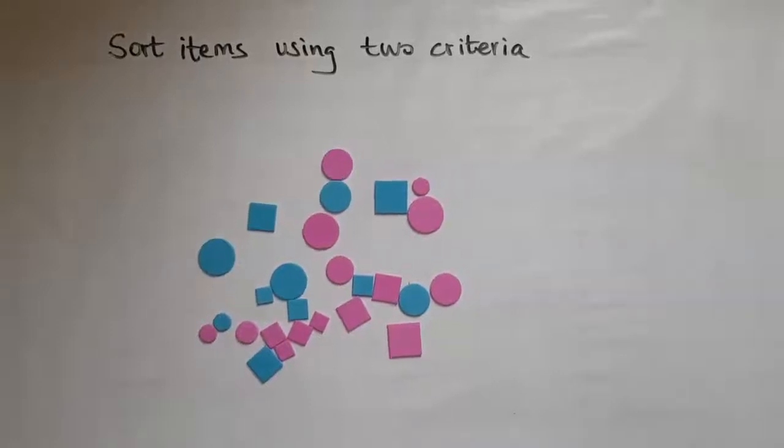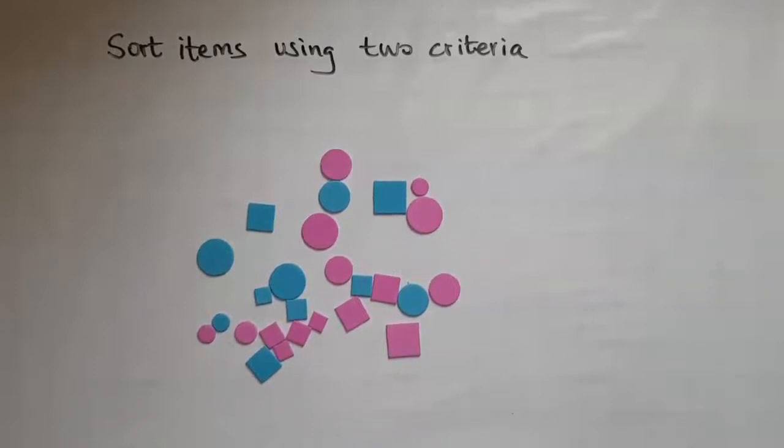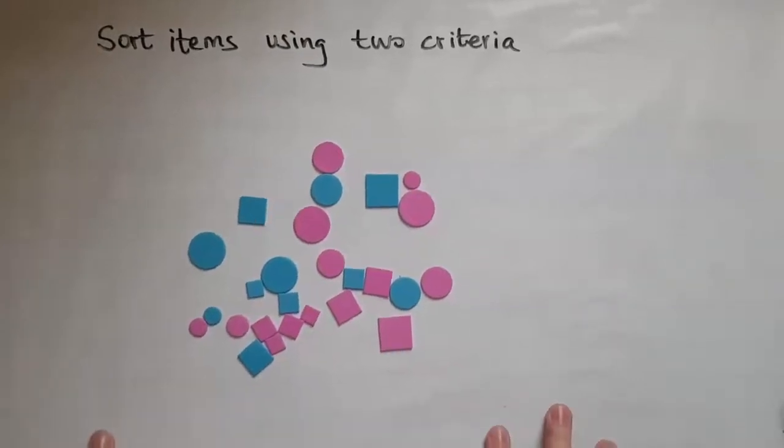In this video we'll sort items using two criteria. So looking at these shapes that I have here, what is different about them?